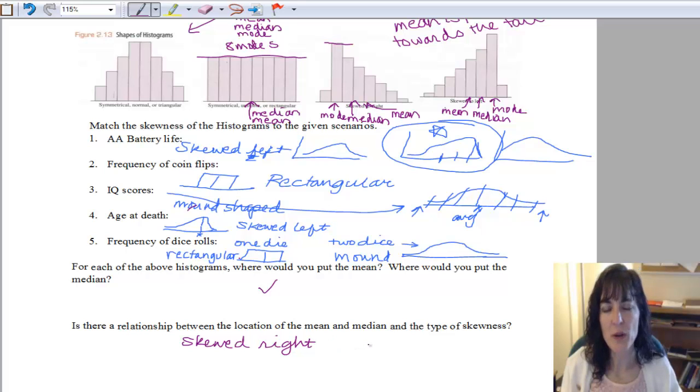Which way do we have it? The median is smaller than the mean. So if we have skewed to the right, our median is smaller than our mean. So I wrote that here, skewed right, median is smaller than mean.